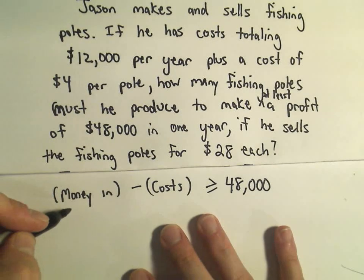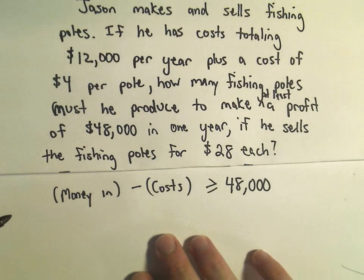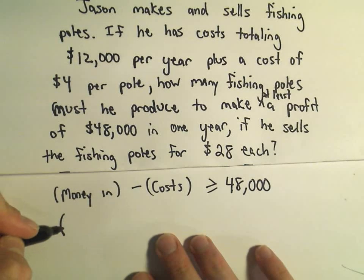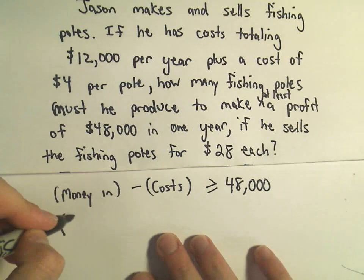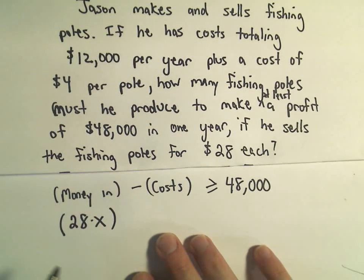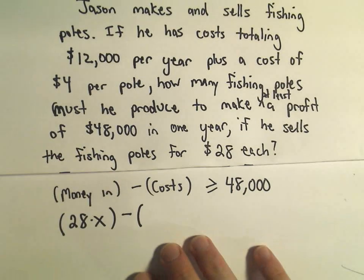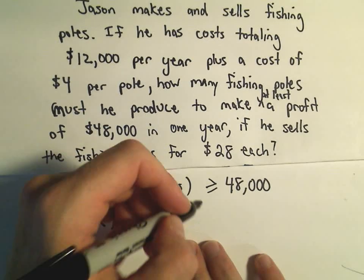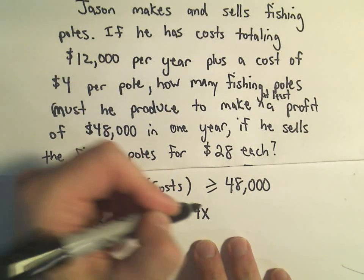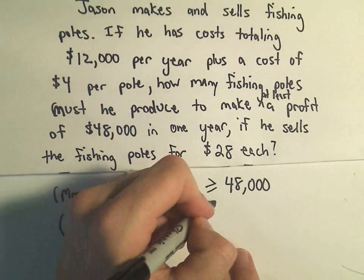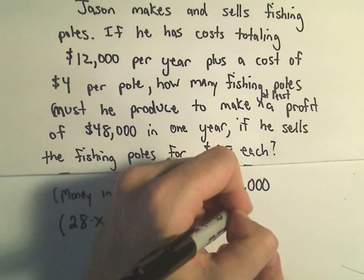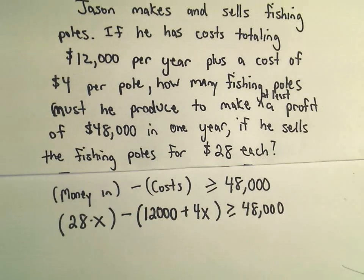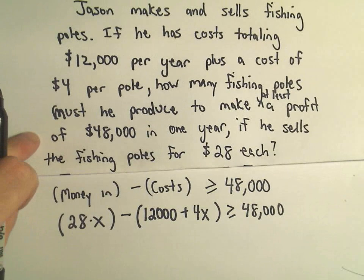So how much money does he make? Let's let x represent the number of fishing poles that he sells. If he sells x fishing poles, he gets $28 per each one — that's how much money he makes. But then we have to subtract away his costs: $12,000 plus $4 per each one that he makes. So 28x minus (12,000 plus 4x) must be greater than or equal to $48,000. Now we've got our inequality set up that we need to solve.